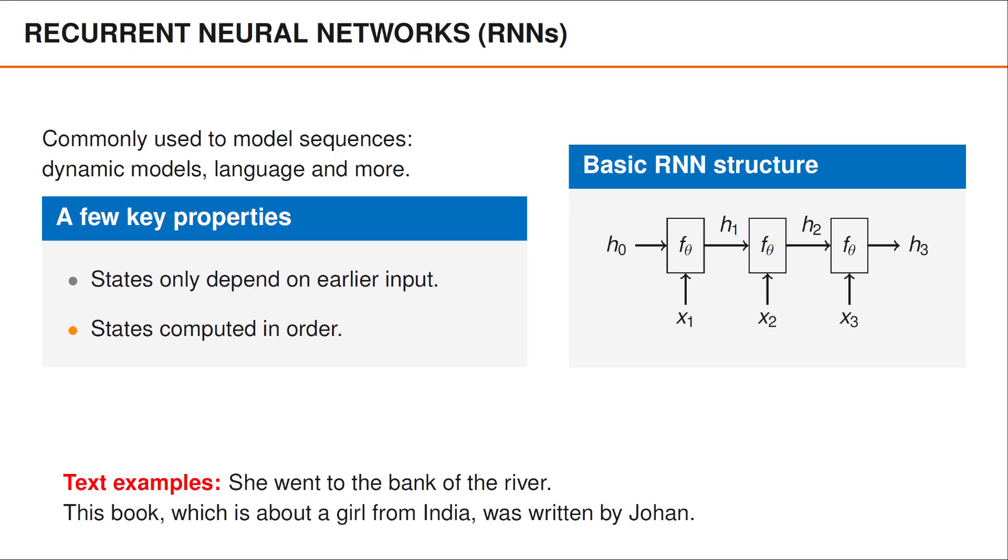If we revisit the example, this book, which is about a girl from India, was written by Yuan, we note that there is no way for the feature vectors of written and book to interact directly.